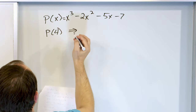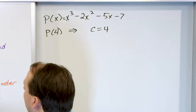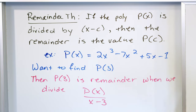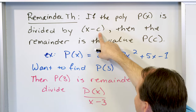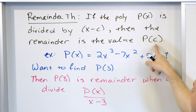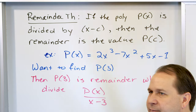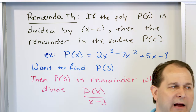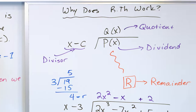So this means in terms of our theorem, c is equal to 4. The theorem says: if a polynomial p of x is divided by x minus c, then the remainder is the value p of c. I bring the letter c in just because it's a generalized thing, and that's how the theorems are written in your books.